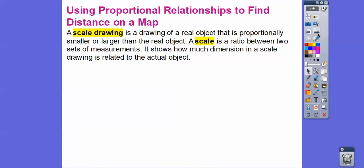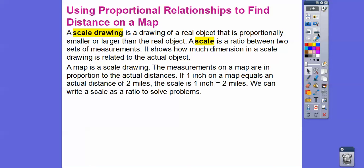A scale drawing is a proportionately smaller (or sometimes larger) representation of a real object. A scale is a ratio between two sets of measurements showing how a drawing's dimensions relate to the actual object — most commonly used with maps. For example, if one inch on a map equals two miles, we write the scale as the ratio one to two.